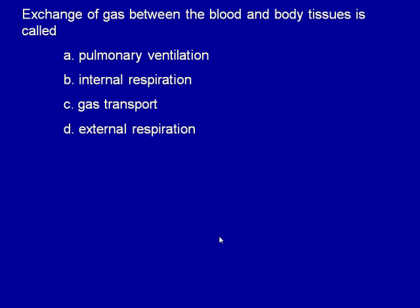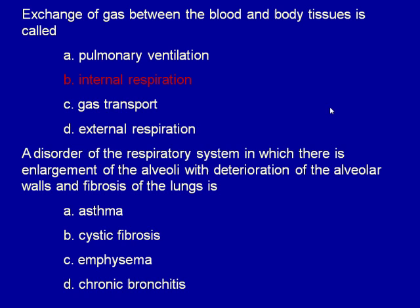Review: Exchange of gas between blood and body tissues is internal respiration; between alveoli and blood is external respiration; gas transport refers to how oxygen and carbon dioxide are carried in the blood; and pulmonary ventilation is inhalation and exhalation. A disorder involving enlargement of the alveoli with deterioration of alveolar walls and fibrosis is emphysema — distinct from chronic bronchitis (excess mucus), cystic fibrosis (genetic), and asthma (non-progressive, allergy-like).